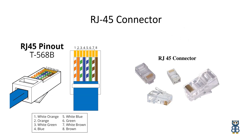Both cable types use the same RJ45 connectors, and both STP and UTP can transmit data at 10 Mbps, 100 Mbps, 1 Gbps, and 10 Gbps. Cable types like CAT1, CAT2, CAT3, CAT4, and CAT5 are outdated and not used in any modern LAN network. CAT7 is still a new technology and not commonly used. CAT5E, CAT6, and CAT6A are the commonly used twisted pair cables.